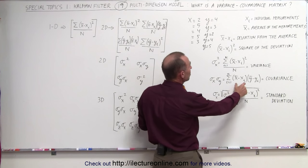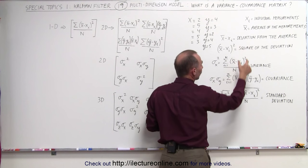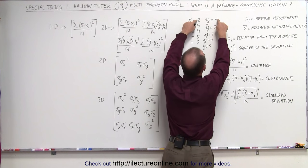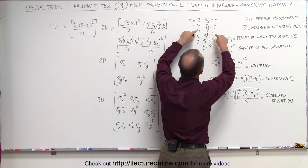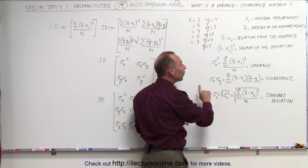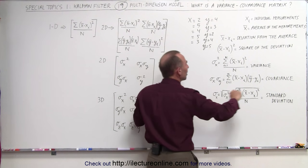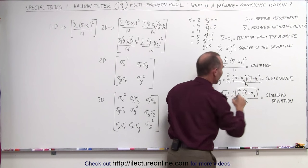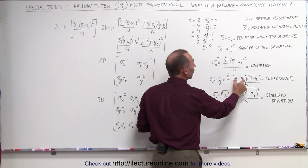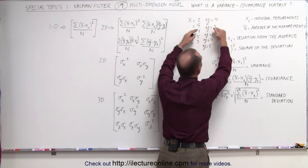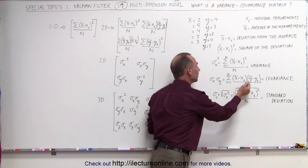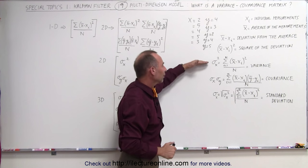In other words, we take the deviation from the average for the length and the deviation from the average for the width, multiply them together for the first set of readings, then the second, third, fourth, and fifth sets. We do that five times, sum them all up, and divide by n — because if we don't divide by n we get an exaggerated value. So we multiply the deviation from the mean for the length times the deviation from the mean for the width for each individual reading, divide by n, and we then get the covariance.